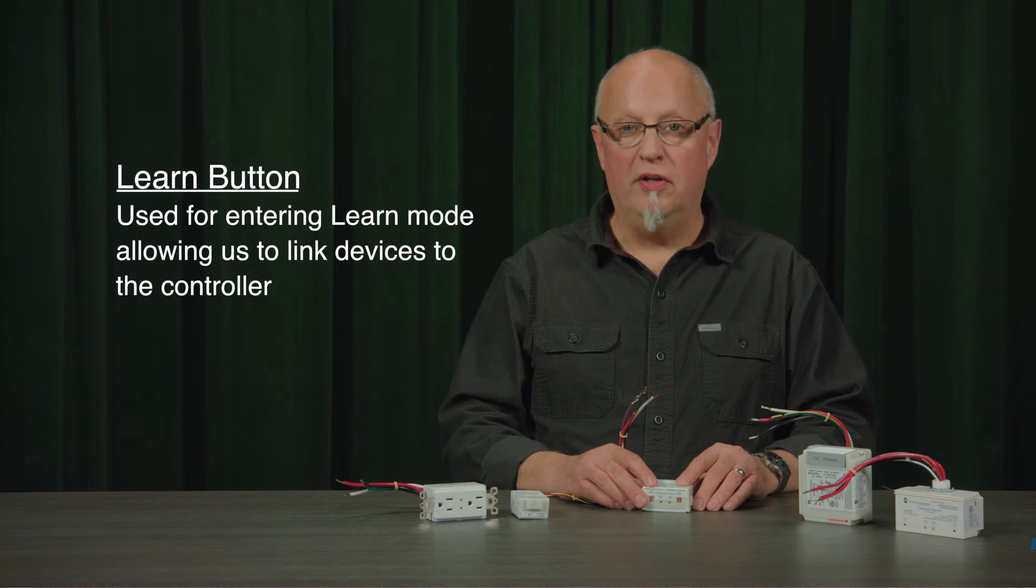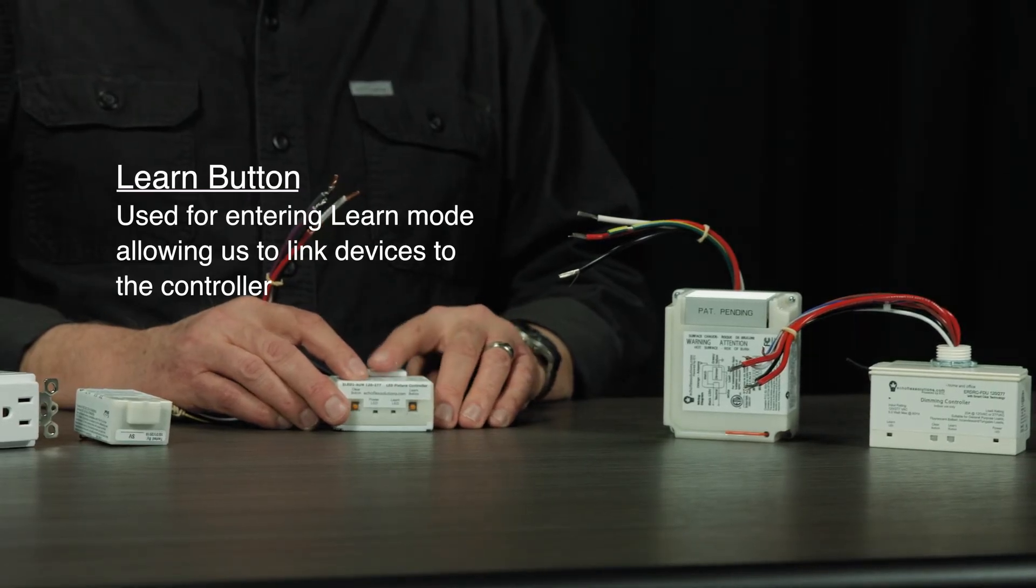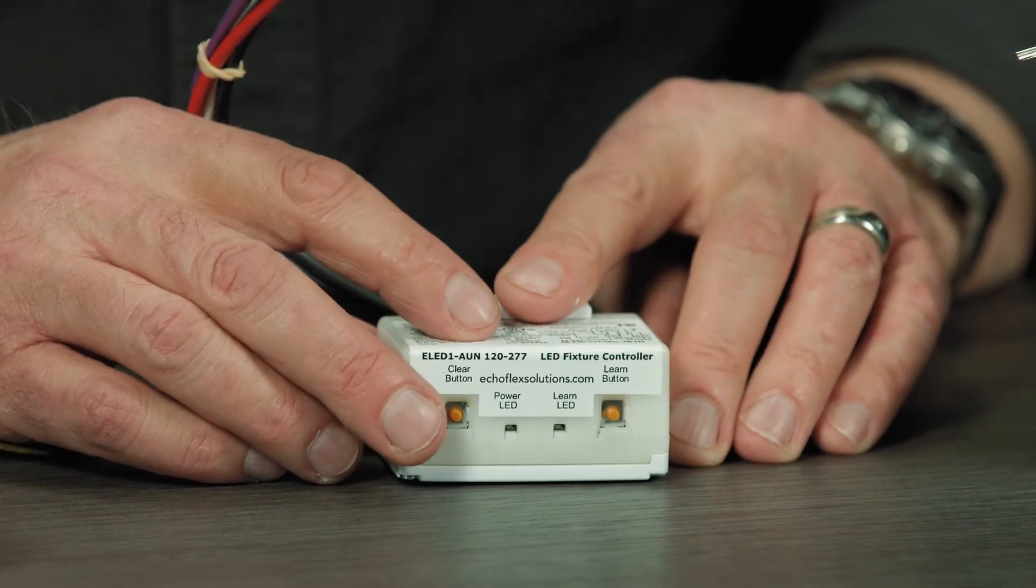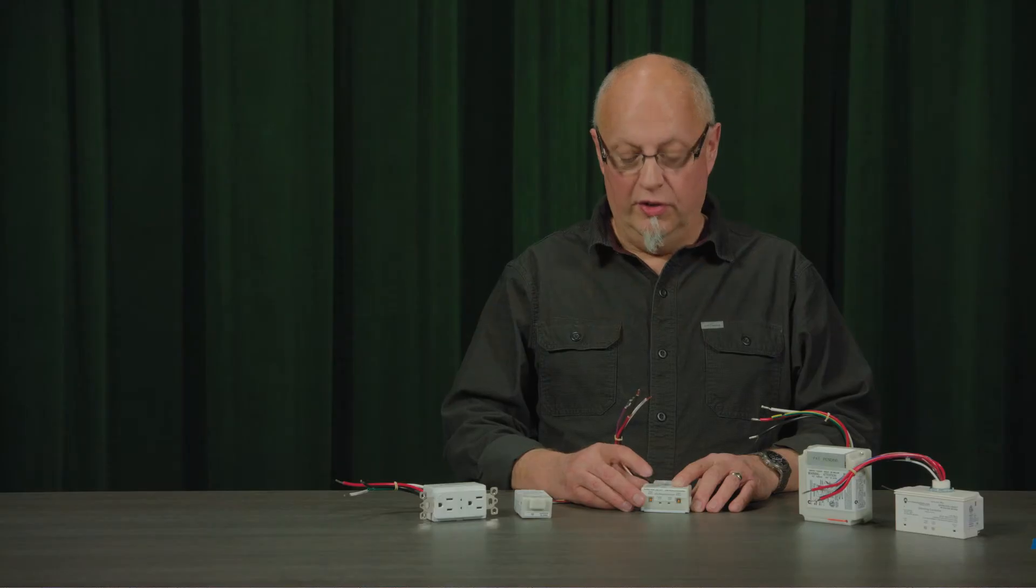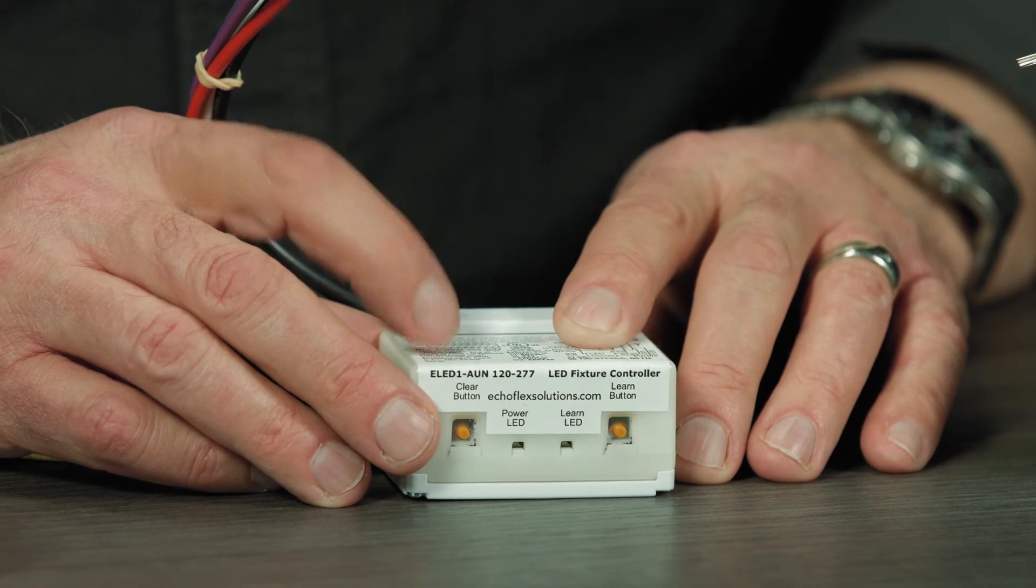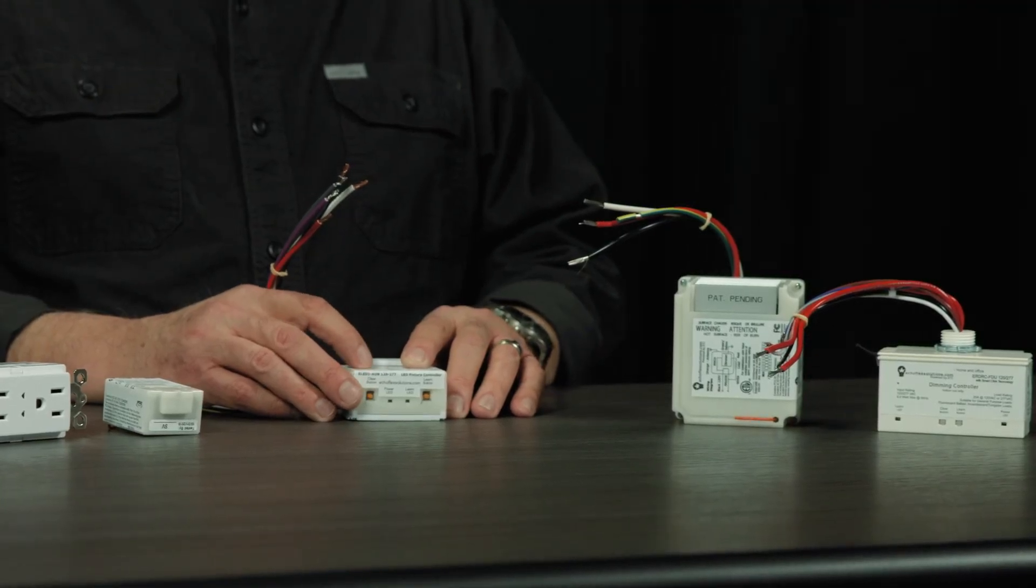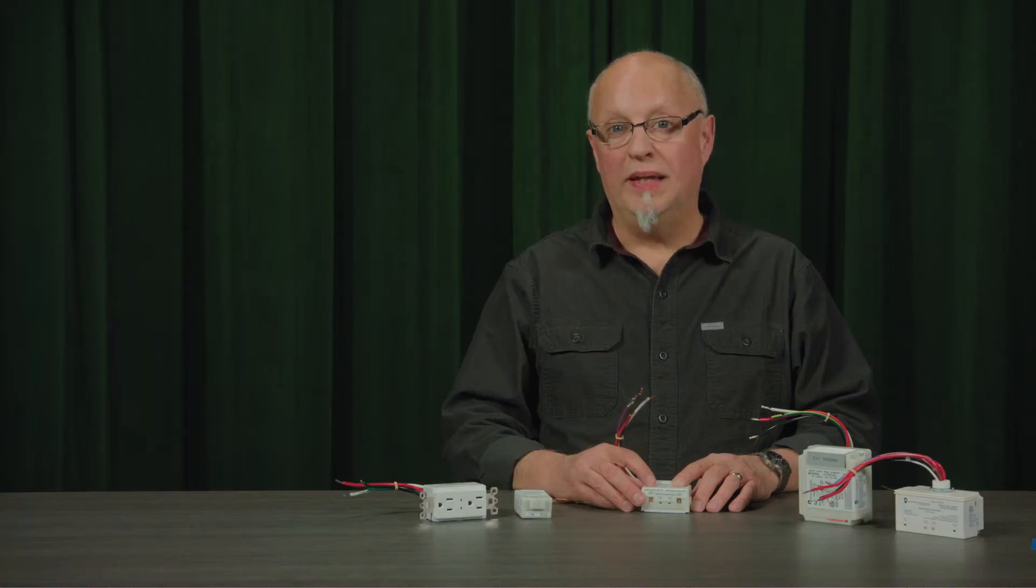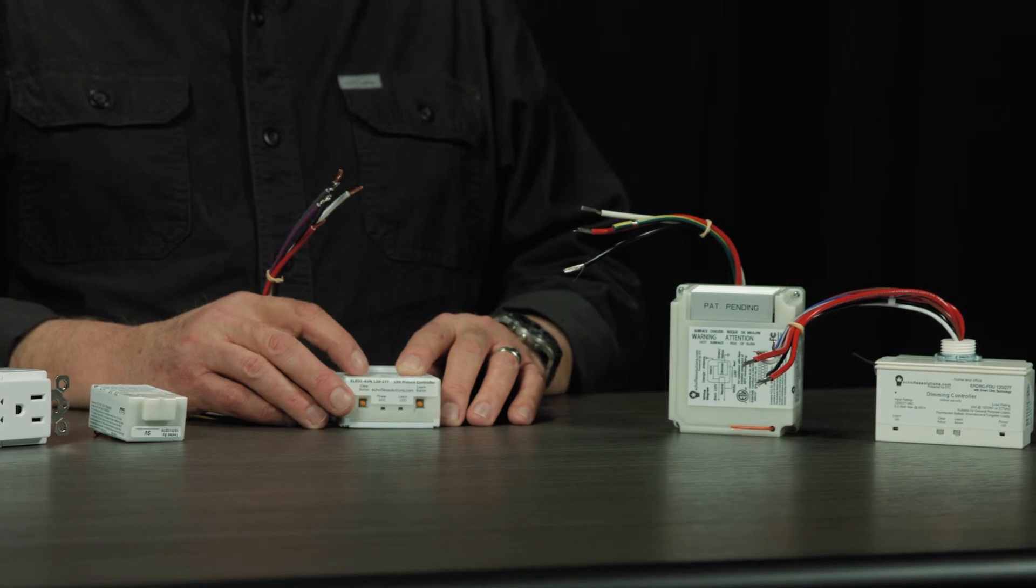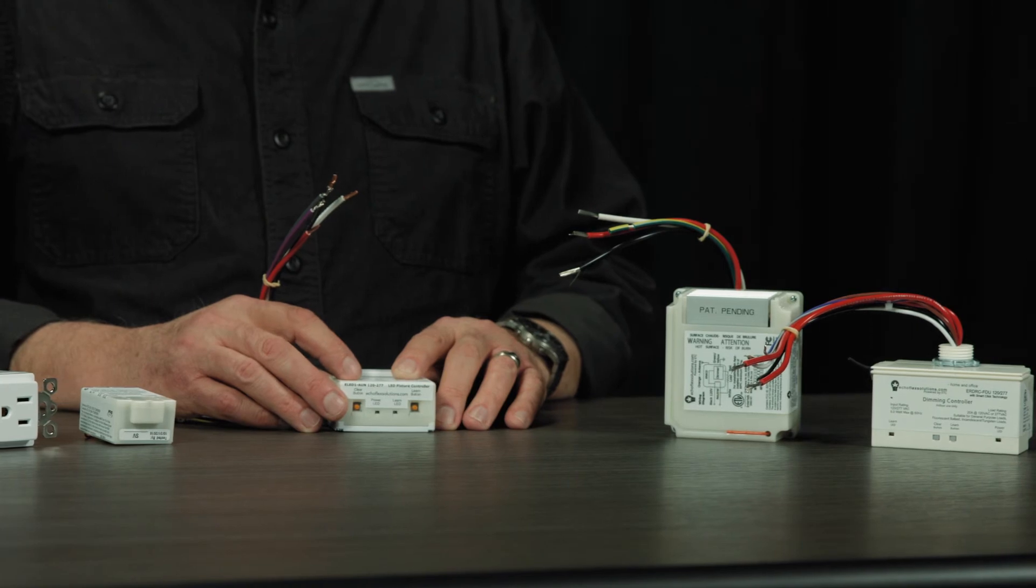So the learn button is what we use to link devices together. I need to put my controller into learn mode by pressing this button in. It's going to cycle its relay and raise and lower the lights. The learn LED will be on solid green. The red LED will be blinking at the same rate as the relay is blinking. After you've exited learn mode by pressing the learn button again, the red power LED will blink a pattern telling you what you have linked to the device and how many of that device you have linked. Check the install guides for more about these blink codes.